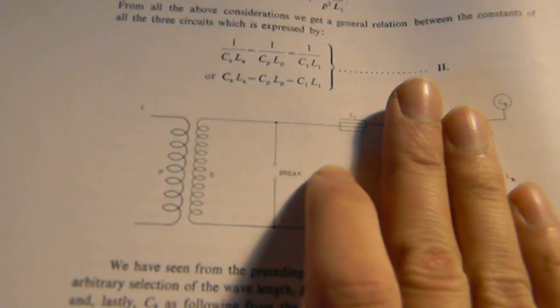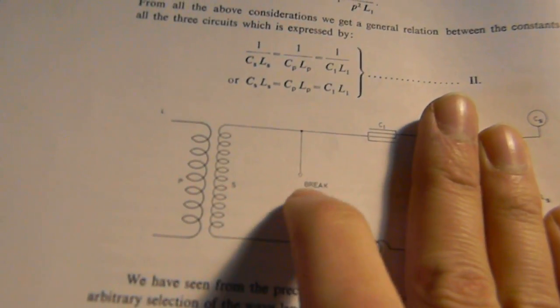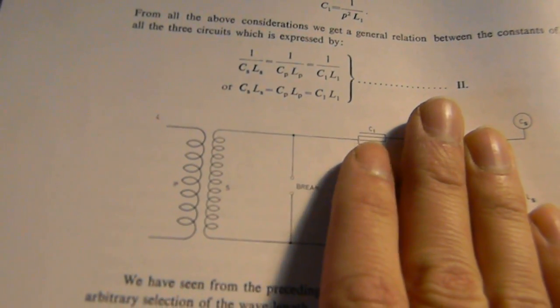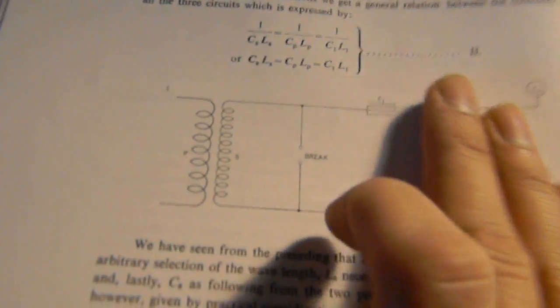This is like a buck converter right here. If we pulse this coil with the brake, we're gonna get a charge into here as this collapses, right?